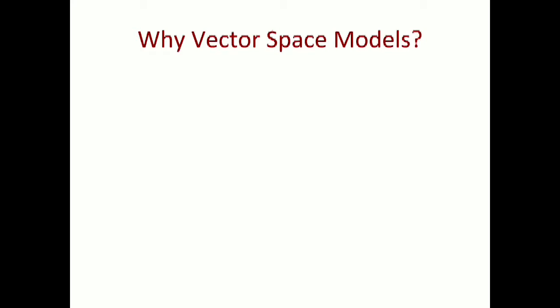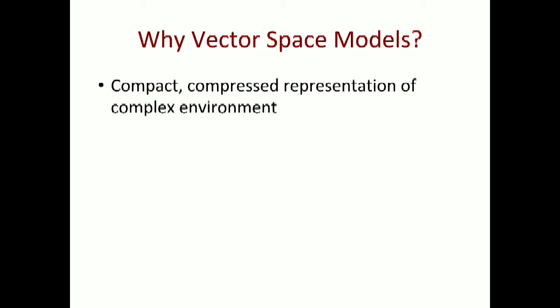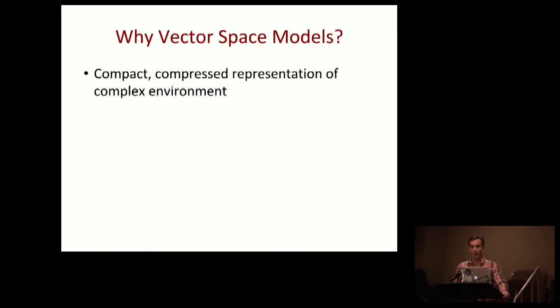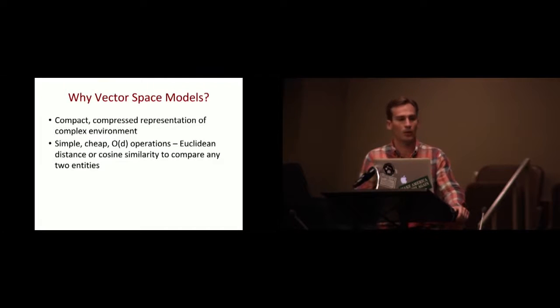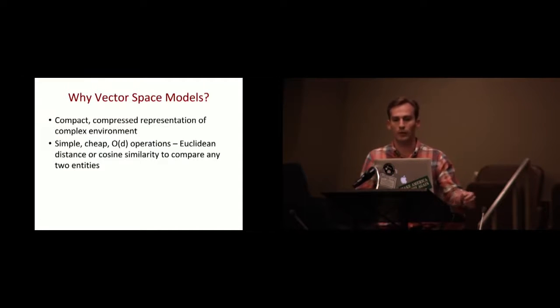Why do we use vector space models and why are they state-of-the-art? They are compressed, expressive representations of complicated interactions. We have millions of users interacting with millions of tracks, thousands of artists, thousands of podcasts, thousands of live stations — and we can represent all of that in a compact space with each vector being about 100 numbers. The operations are also simple: Euclidean or cosine distance, which scale linearly with dimensionality.